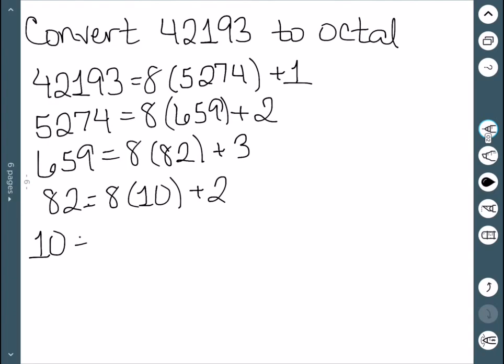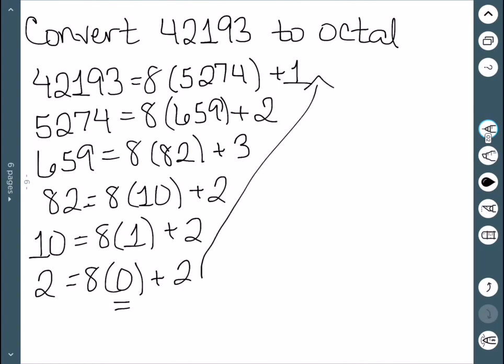10 divided by 8 is 1 with a remainder of 2. And then finally 2 divided by 8 has a quotient of 0 and a remainder of 2. So we have the final quotient of 0 that we wanted.